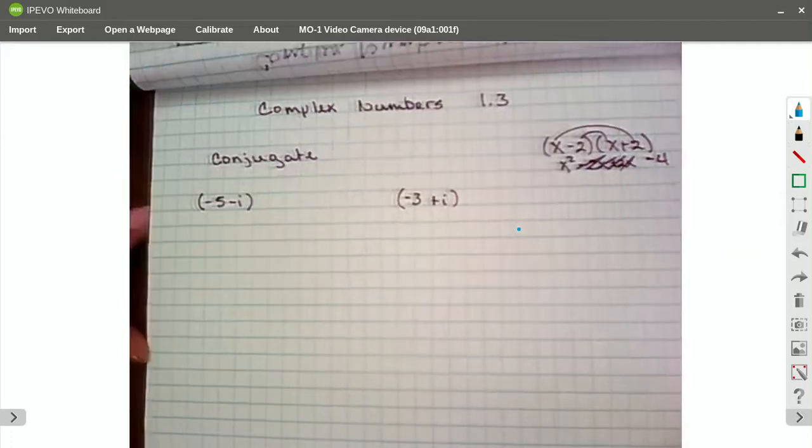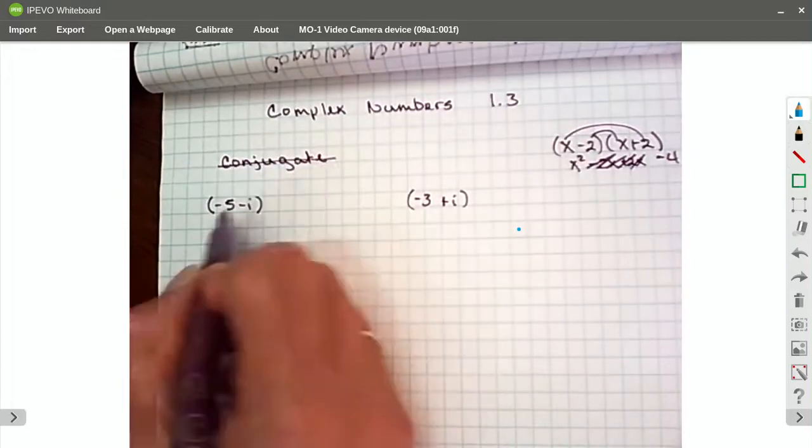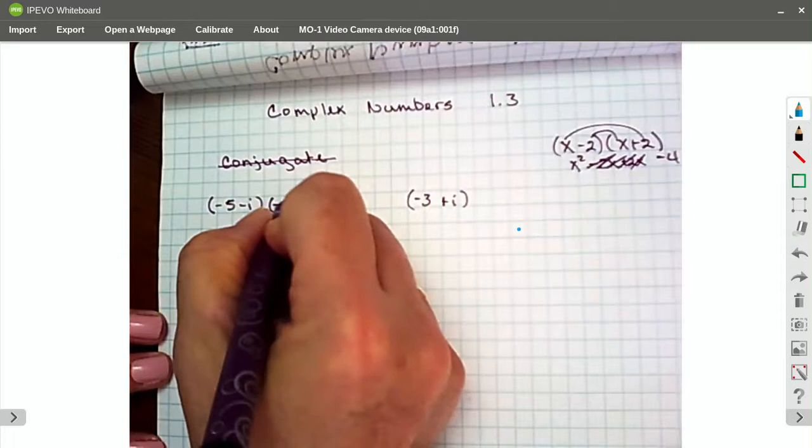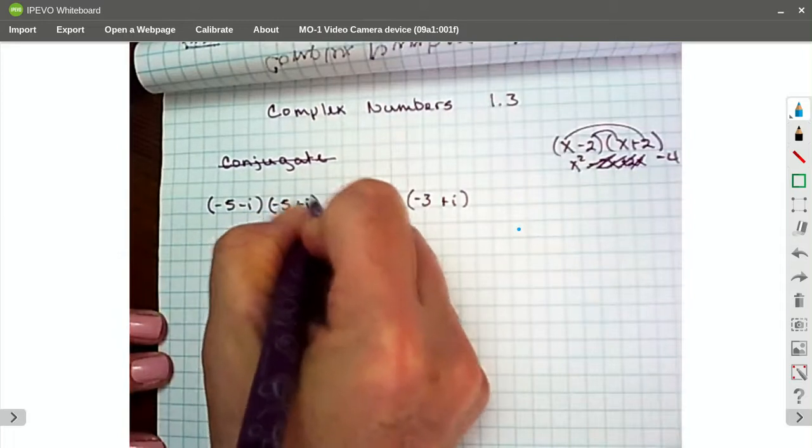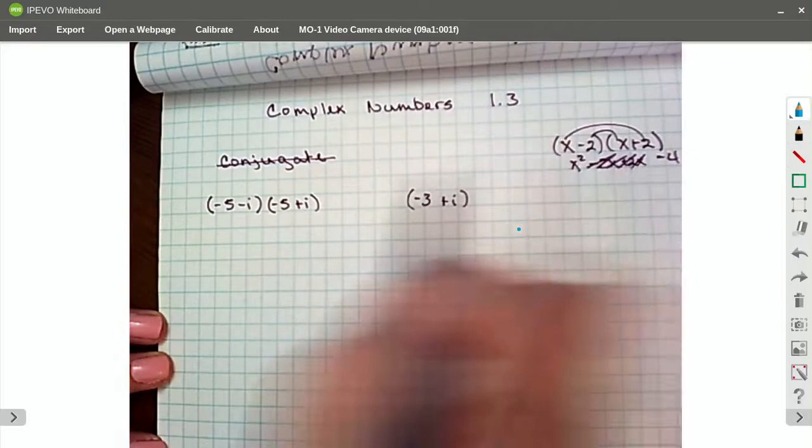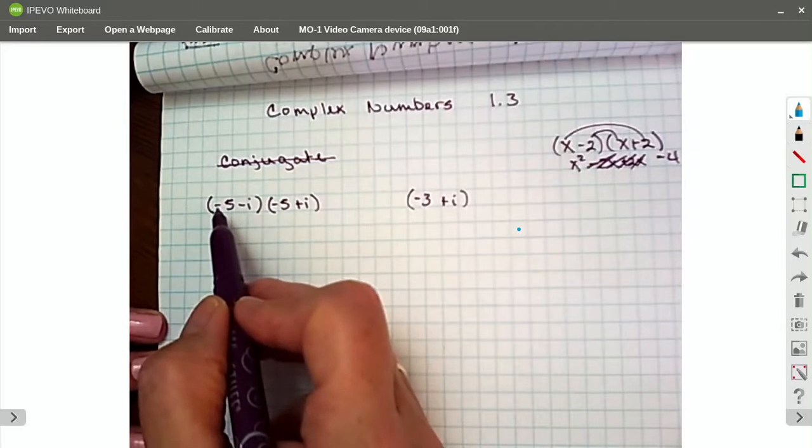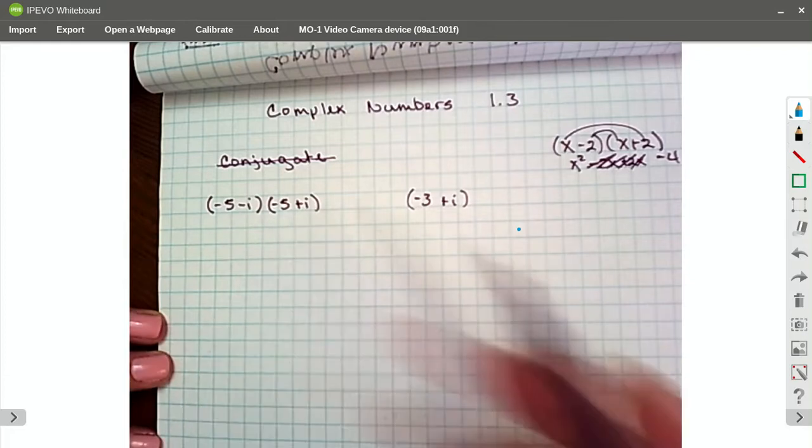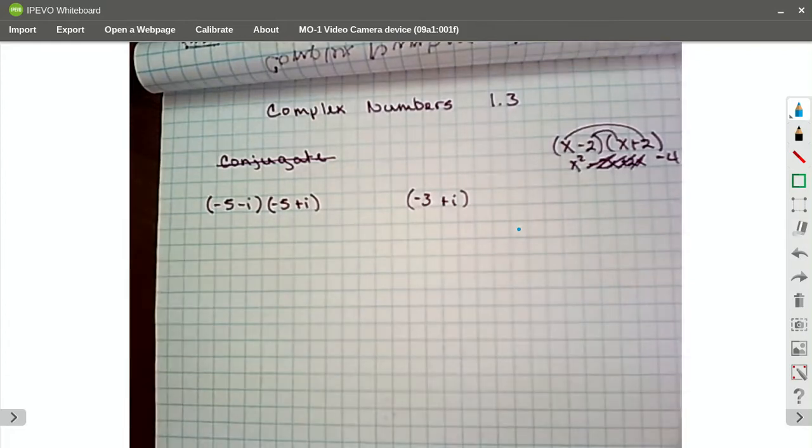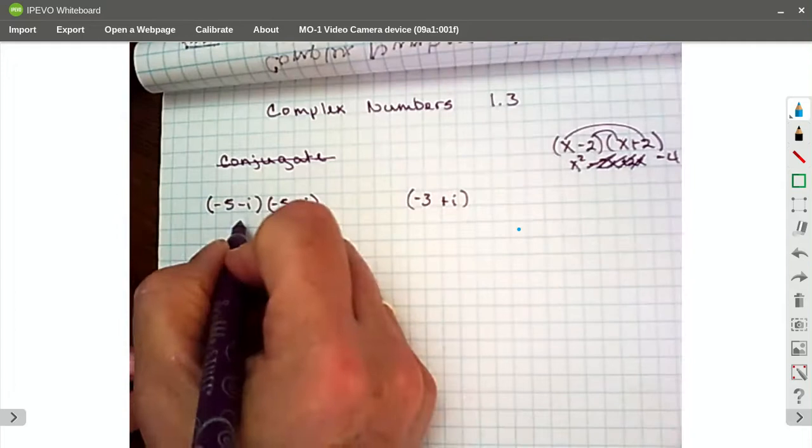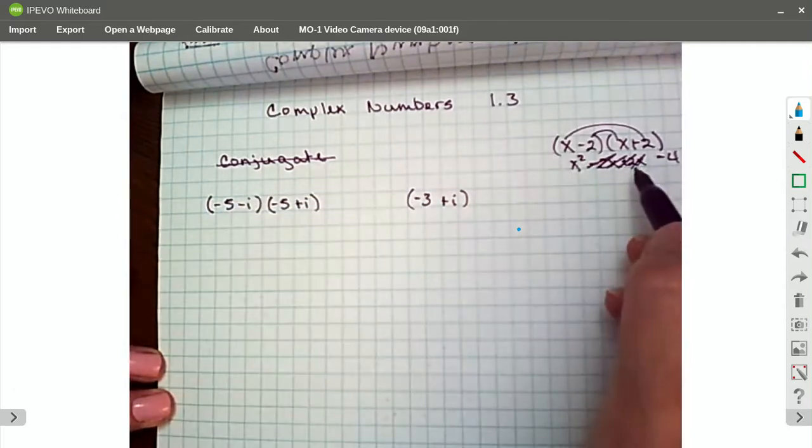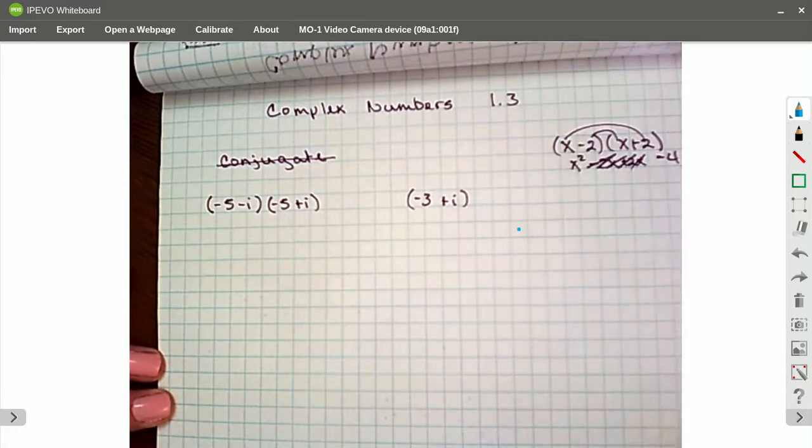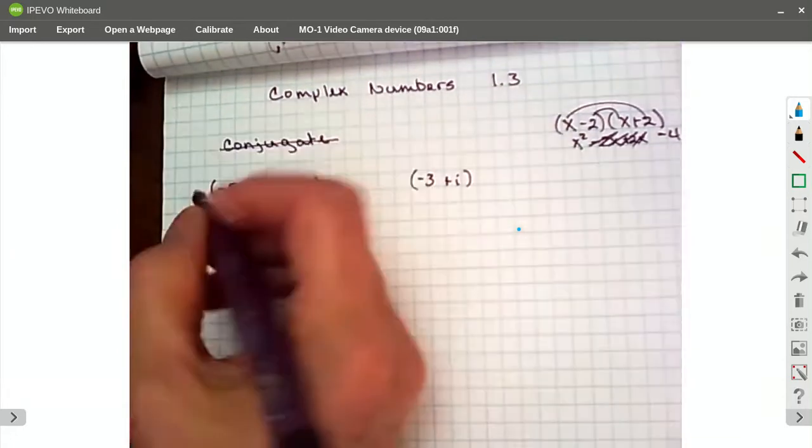Well, that's what this is. The conjugate of negative 5 minus i is going to be negative 5 plus i. You want the difference of squares set up here. Leave the first term alone, change the sign in the middle, leave the last term alone. And then foil it out. And what's going to happen is the same exact thing. You're going to get that first term, you're going to get that last term, and those center terms are always going to cancel out.